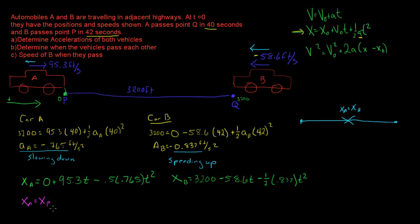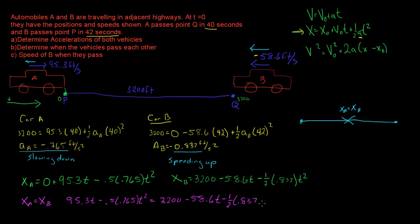Setting X_A equal to X_B: 95.3T minus 0.5 times 0.765 T² equals 3200 minus 58.6T minus one-half times 0.837 T². Solving for T gives two roots, but we want the positive root, which is T equals 20.7 seconds. It takes 20.7 seconds for A and B to travel and meet each other.